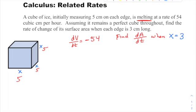First things first: I have dA/dt is what I'm looking for when x is three. Let's start with the surface area formula. The surface area of a cube is six surfaces, each one being a square. So there are six squares, each with an area of x squared. It's a square, x by x.